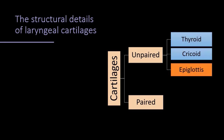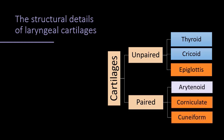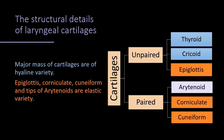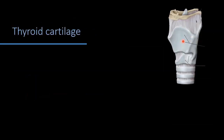Among the unpaired cartilages we find thyroid, cricoid, and epiglottis — these are bigger in size. Paired cartilages are smaller: arytenoid, corniculate, and cuneiform. The major mass of cartilages of the larynx are of hyaline variety, shown in blue — thyroid, cricoid, and the base of the arytenoid. The apex of the arytenoid along with epiglottis, corniculate, and cuneiform cartilages are of elastic variety.